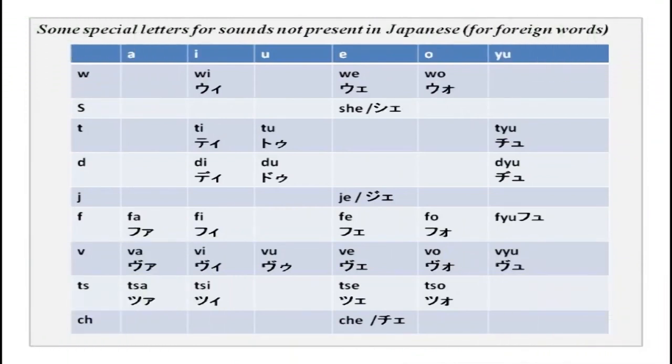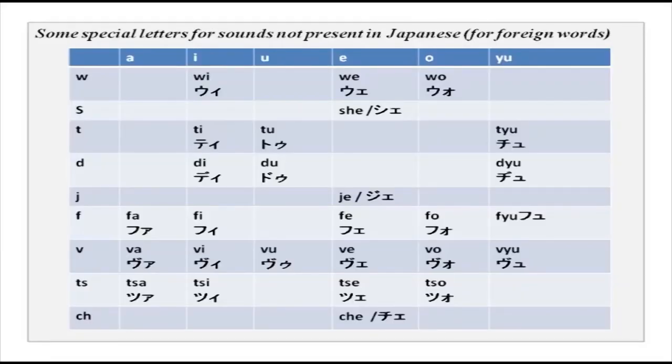Now, as katakana is for foreign words — words which are not of Japanese origin — naturally foreign words will have a lot of sounds which are not there in the language. Thus, to accommodate those foreign sounds, special letters have been created. These are those special letters here on your screen.